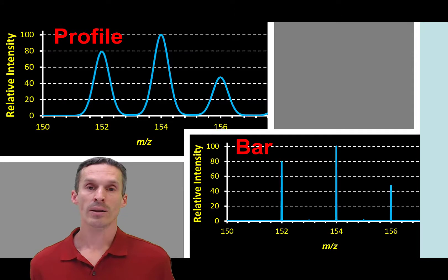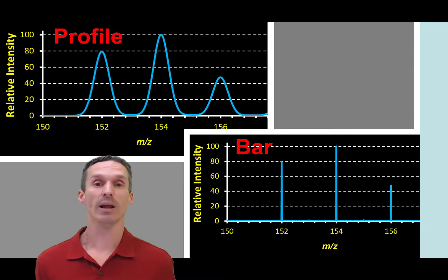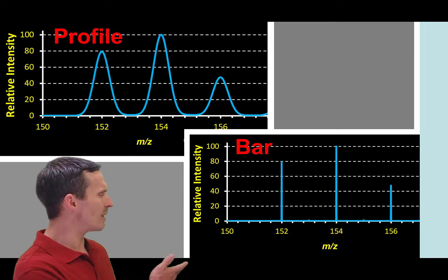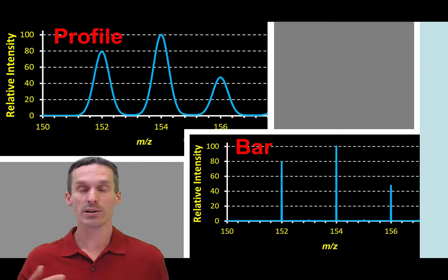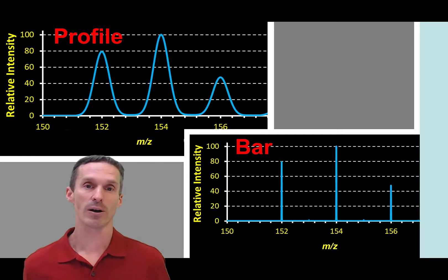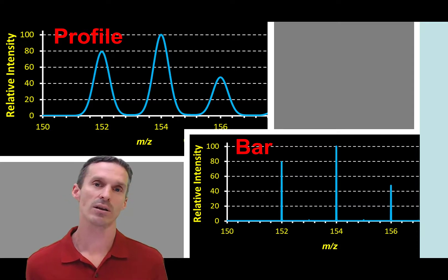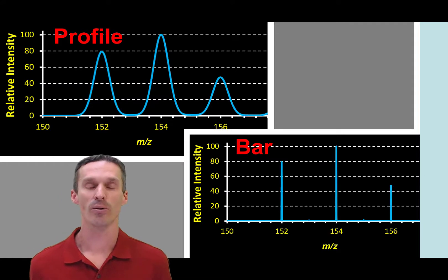You might notice in textbooks or online that some of the mass spectra have that width to them, but other ones show up like these infinitely thin sticks. We just call these profile spectra or bar spectra. A bar spectrum is more of a representation because it's not in any way possible for a mass spectrum to be recorded that way.